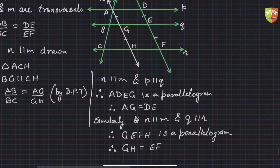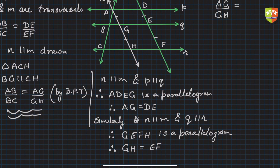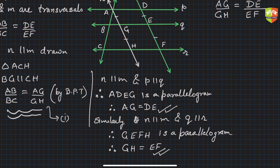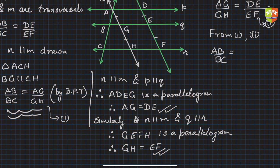Now, AG/GH can be written as DE/EF, since AG = DE and GH = EF. Calling these results (1) and (2), from (1) and (2) we can conclude that AB/BC = DE/EF, which is exactly what we intended to prove.